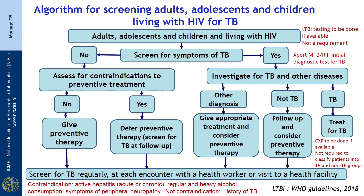The algorithm for screening adults, adolescents and children living with HIV is as follows. First, screen them for symptoms of TB. If they do not have symptoms of TB, assess them for contraindications to preventive treatment. Contraindications include active hepatitis, regular and heavy alcohol consumption, and symptoms of peripheral neuropathy.